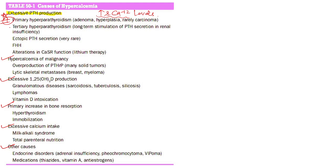Primary hyperparathyroidism is most commonly due to adenoma, hyperplasia, or rarely carcinoma — conditions with increased parathyroid cell mass and impaired feedback inhibition by calcium. Tertiary hyperparathyroidism occurs with long-term stimulation of PTH secretion in cases of renal insufficiency, where kidneys cannot form active vitamin D, causing hypocalcemia and chronically elevated PTH. Rarely, there can be ectopic PTH secretion from a tumor.